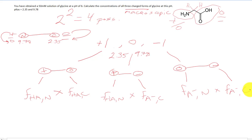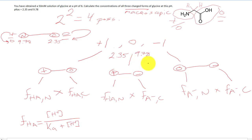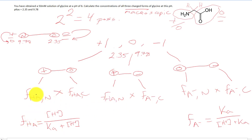The only thing that changes between the two groups is the Ka value. We'll have one Ka for the N-terminus (pKa = 9.78) and a different Ka for the C-terminus (pKa = 2.35). The Ka values are different because the pKa values are different, and those are what will change across our calculations.